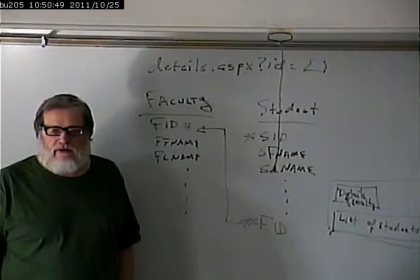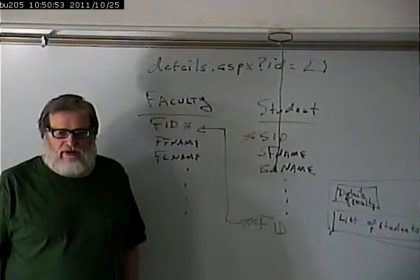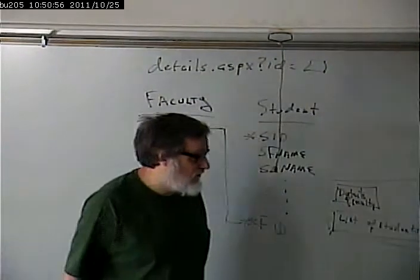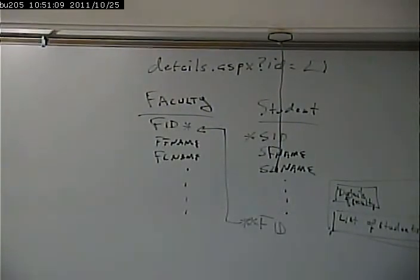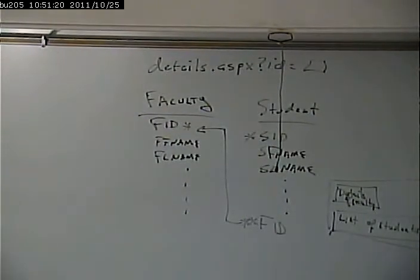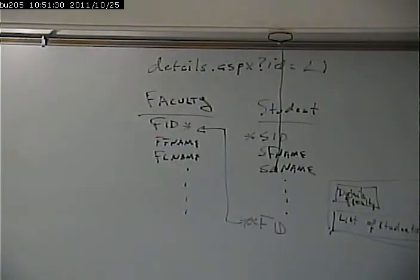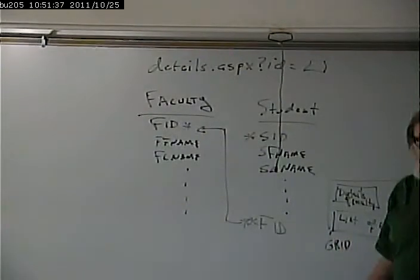What objects do we need to add to that page to do this? Take a minute to think through it. A grid view is probably better because a grid view is geared to show more than one. Since this is a list of students as opposed to a single student, we're better off adding a grid view. And a SQL statement to go get them — what object are we going to create to put our SQL statement in? A SQL data source.